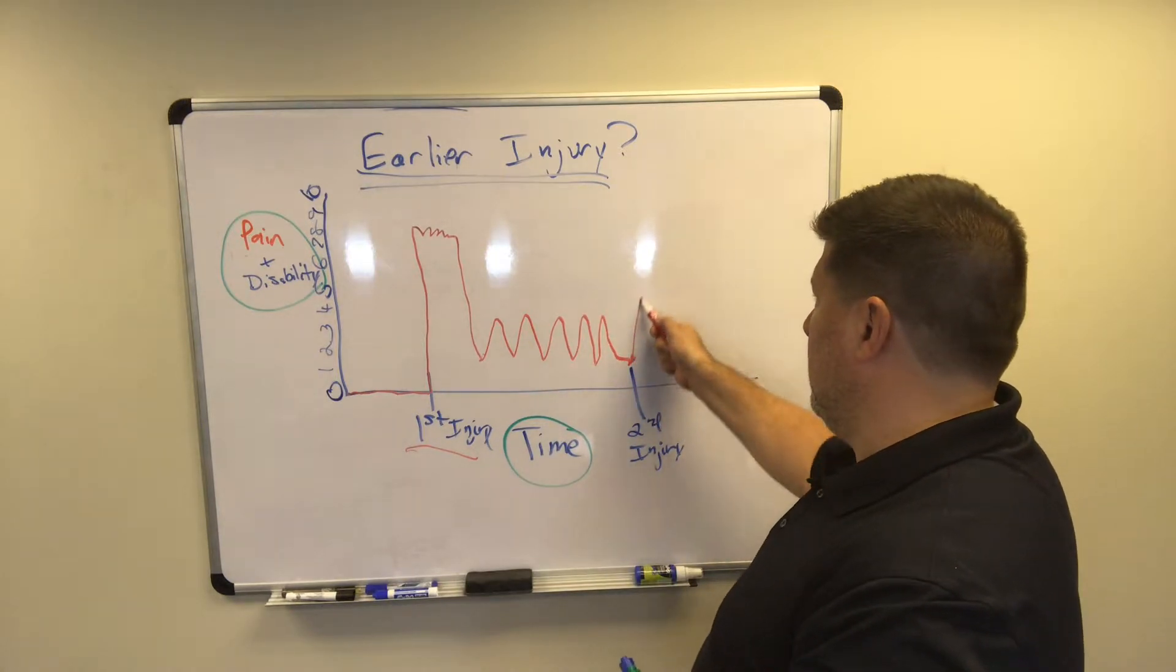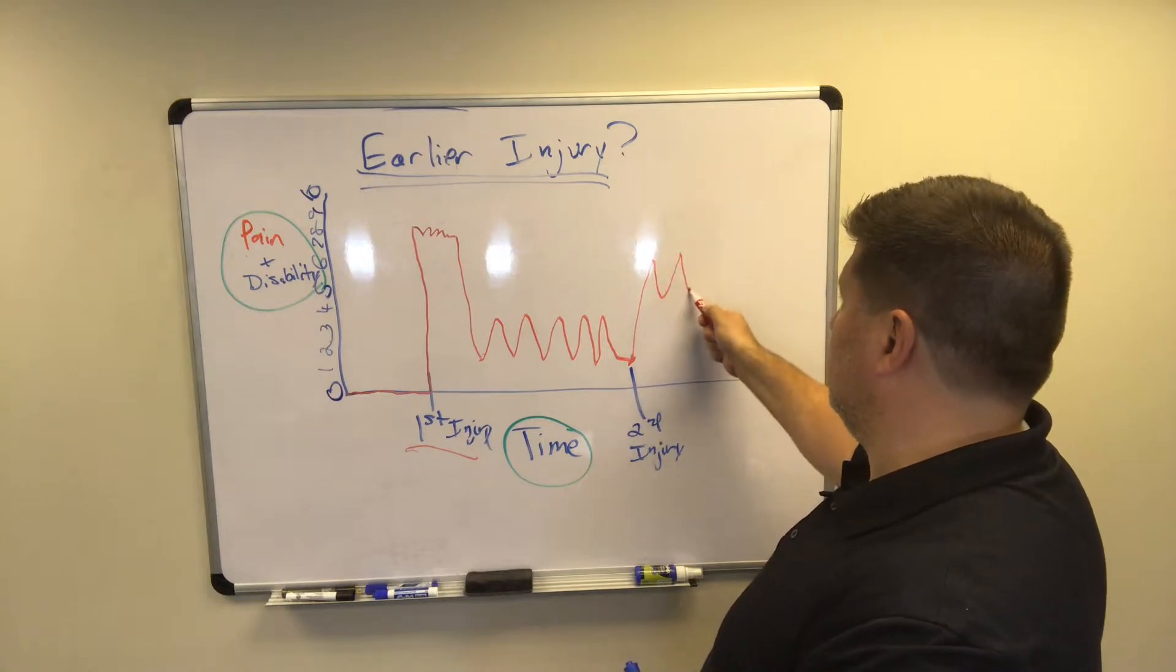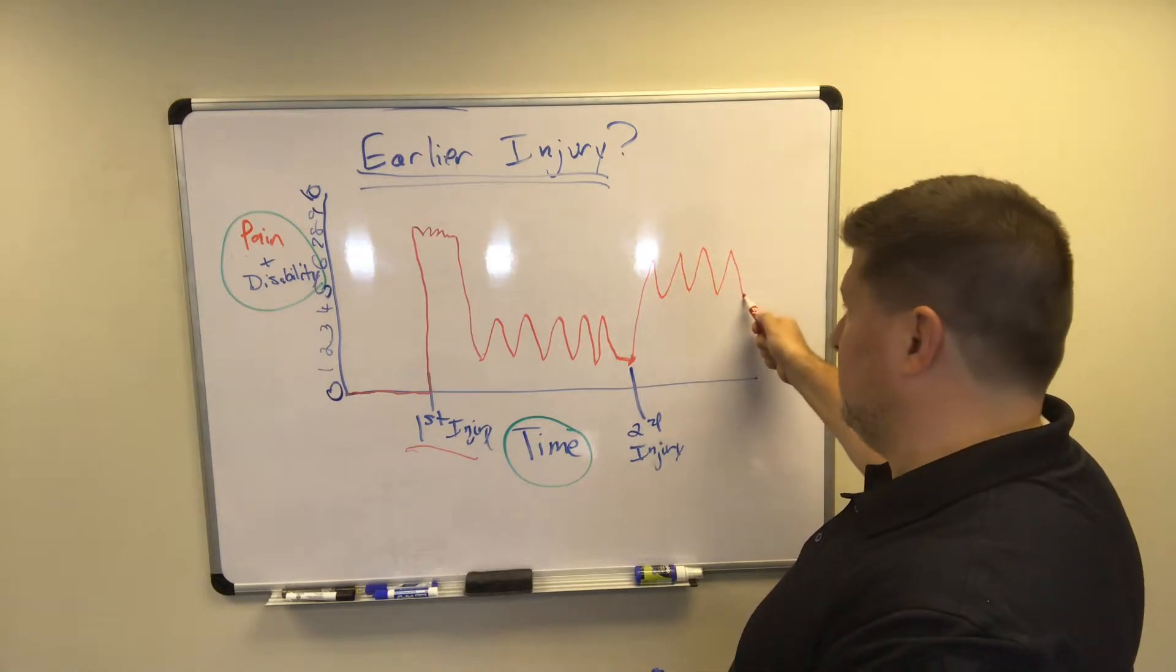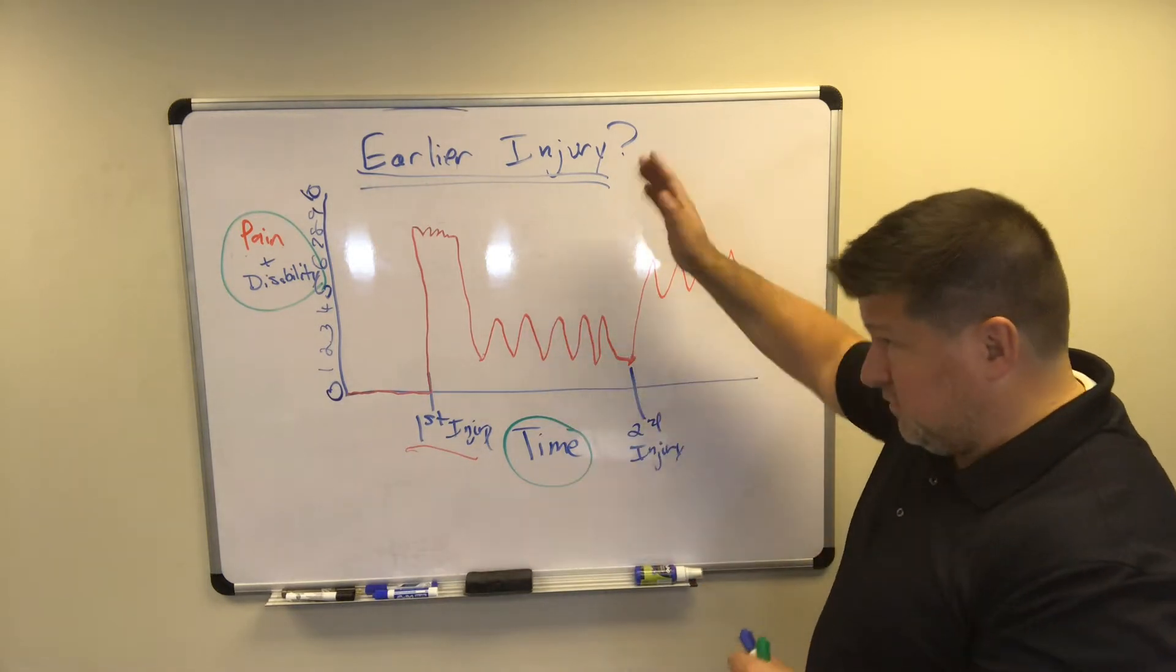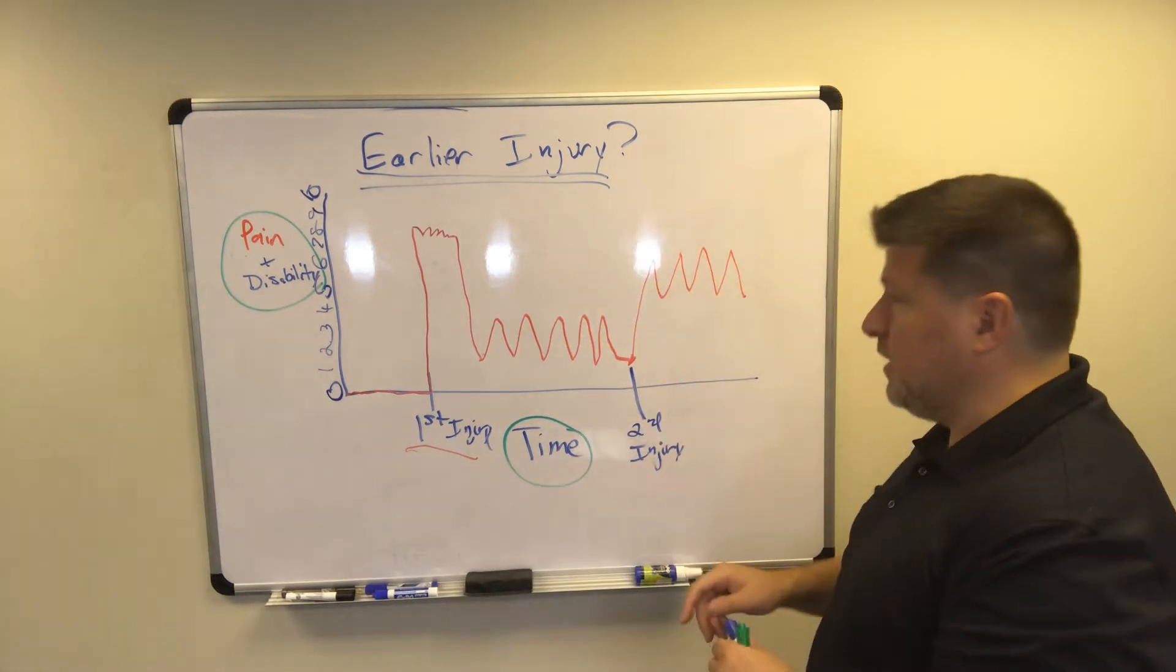And then he gets to this accident and now his pain goes like 6, 5, 6, 7, 5, 6, 7. So that's his injury, that's his pain level between the first and second injury.